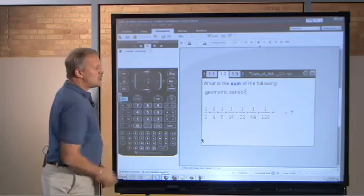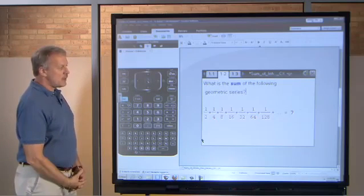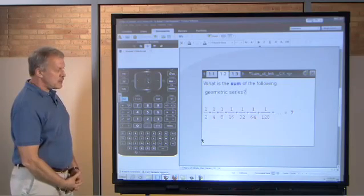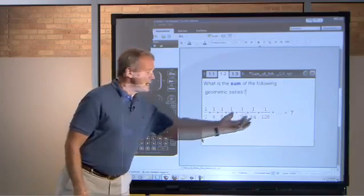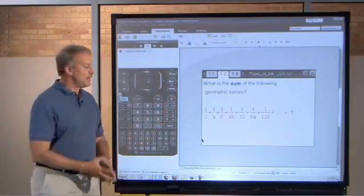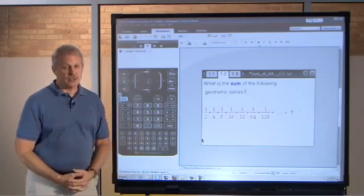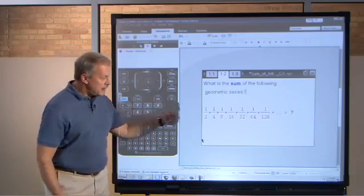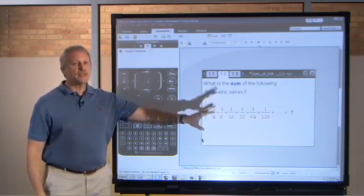So to go on to the next page, Ctrl-right arrow goes to the next page, and we want to find the sum of this infinite geometric series. I've heard many different answers. Students have told me the answer is infinity. They've told me the answer is even down to zero, which of course doesn't make much sense.